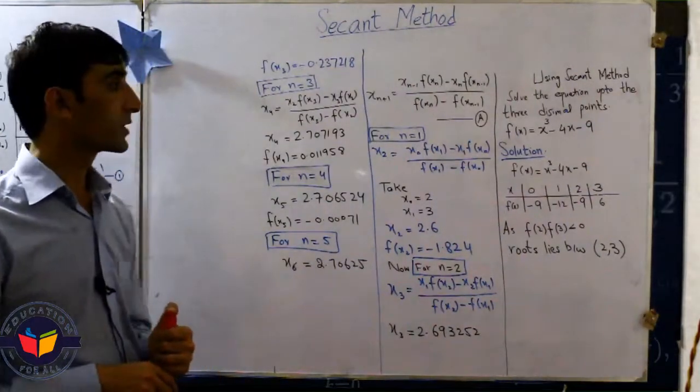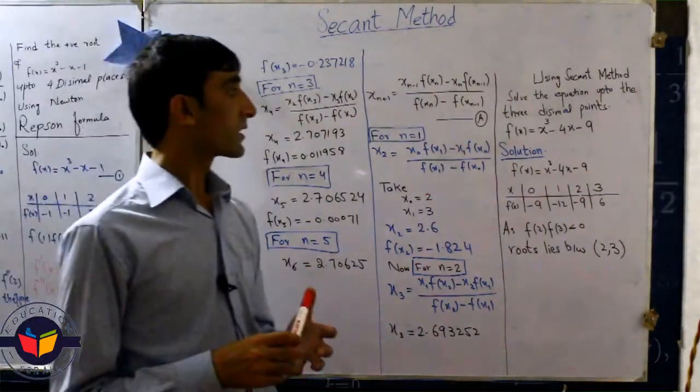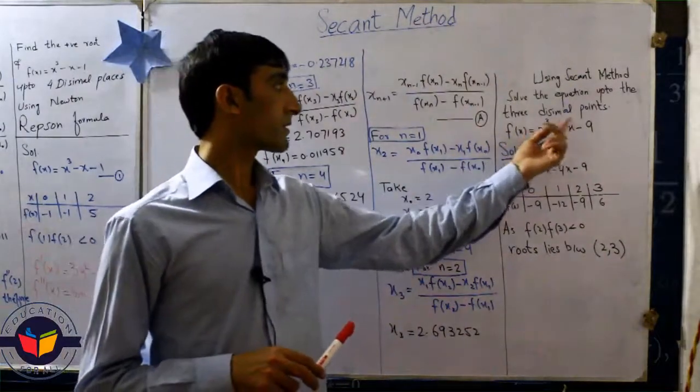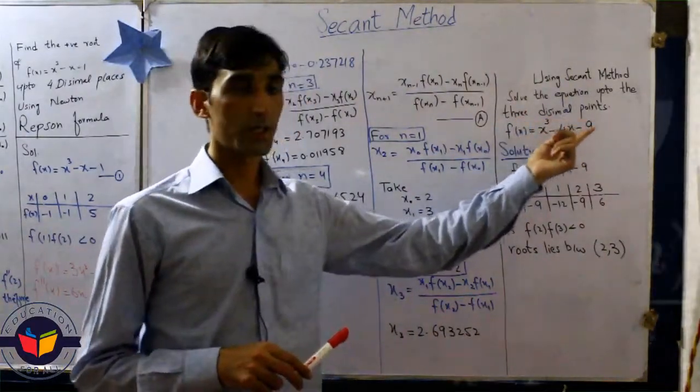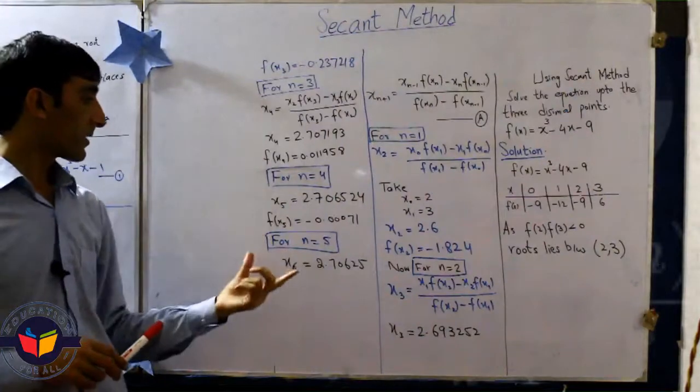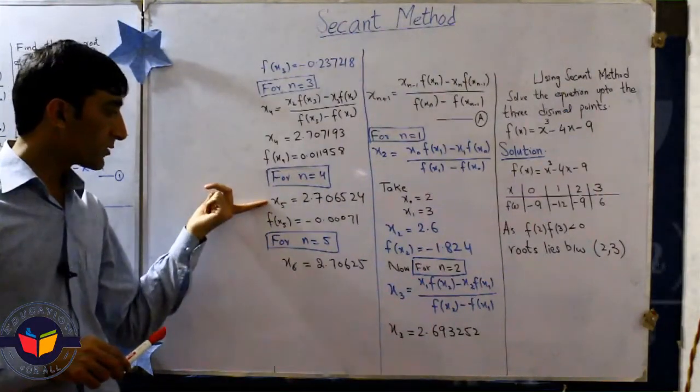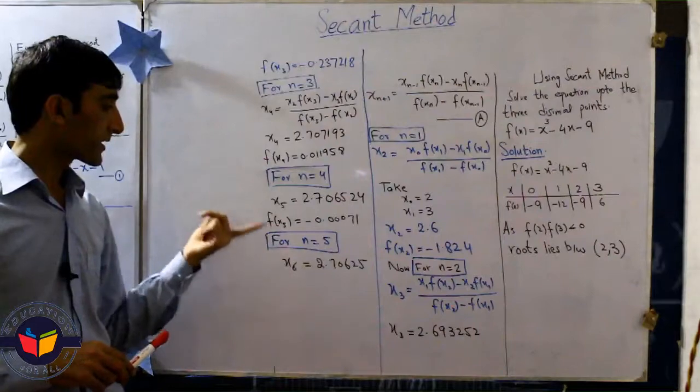Here in this question we want to calculate the approximate zero up to 3 decimal points. You can see here for the value of x5 and x6.